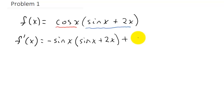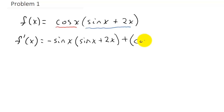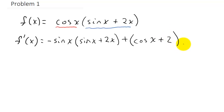Plus the derivative of the second function. The derivative of sine is cosine, plus the derivative of 2x, which is 2. So the derivative of the second function is cosine x plus 2, times the first function.